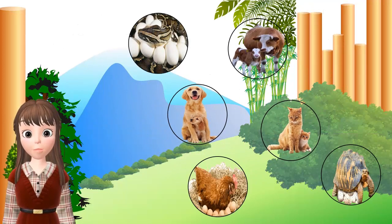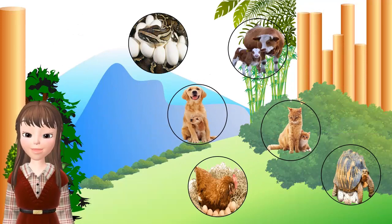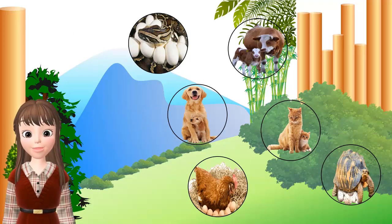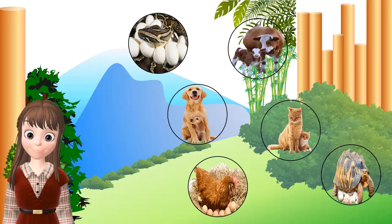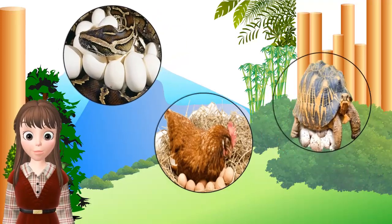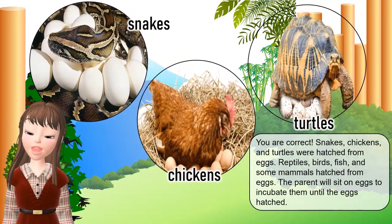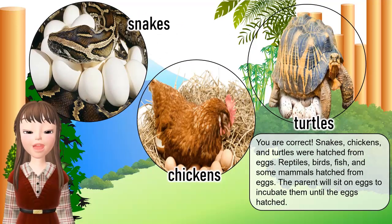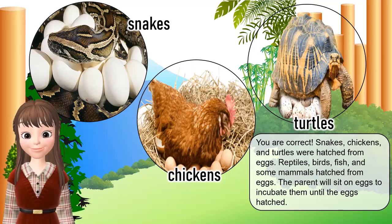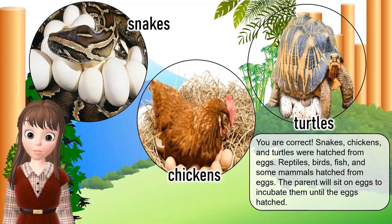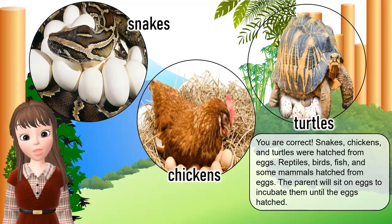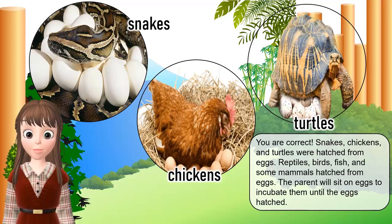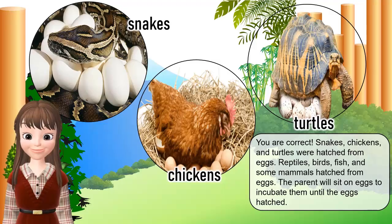Which of the following animals were hatched from egg? Snakes, chickens, and turtles were hatched from eggs. Reptiles, birds, fish, and some mammals hatched from eggs. The parent will sit on eggs to incubate them until the eggs hatch.